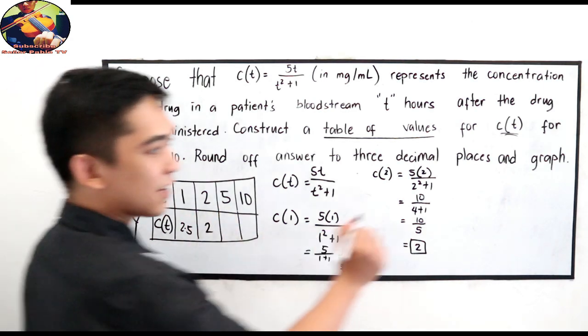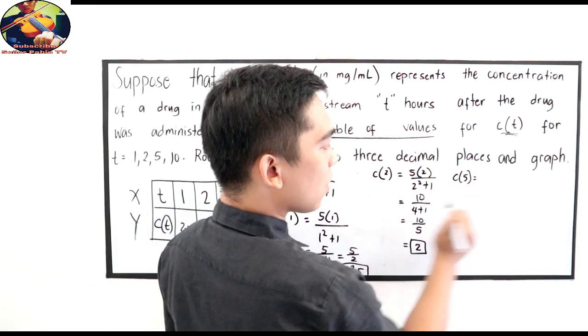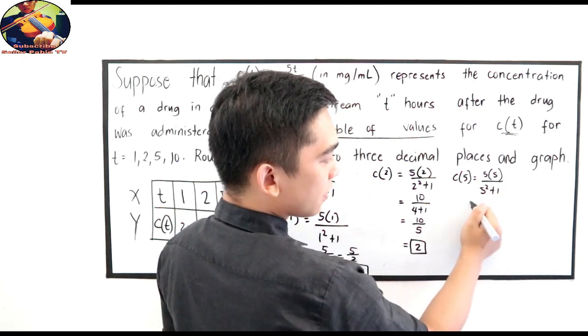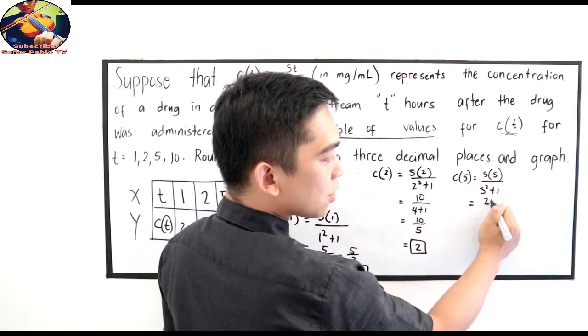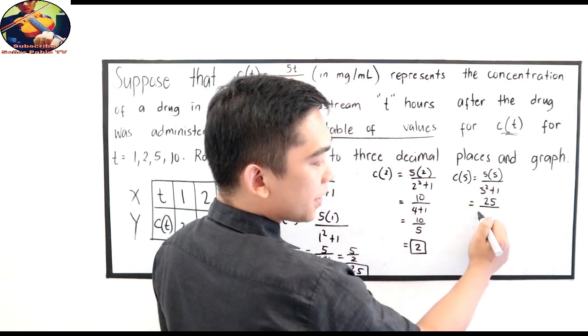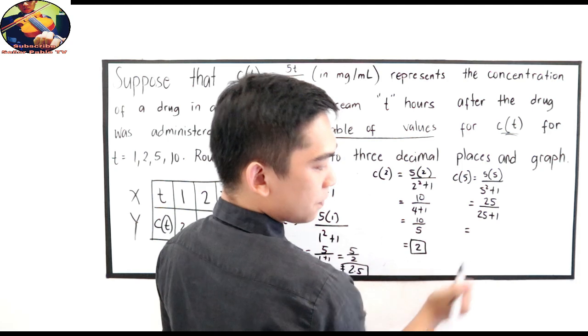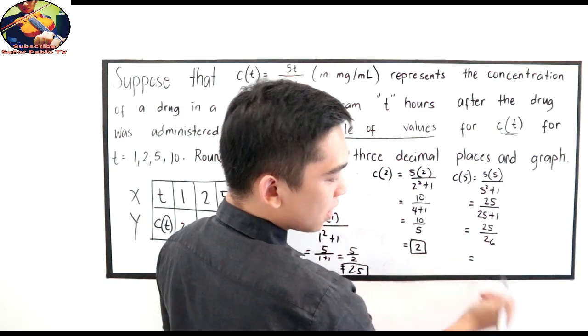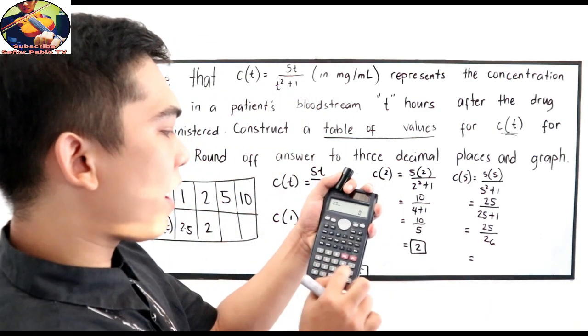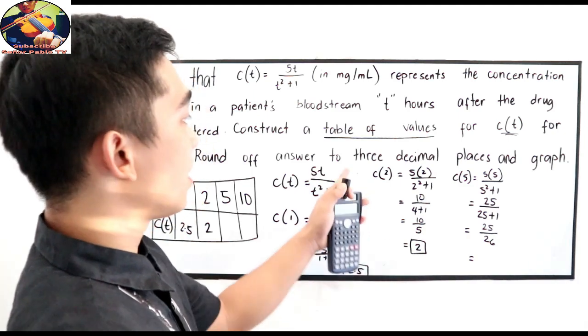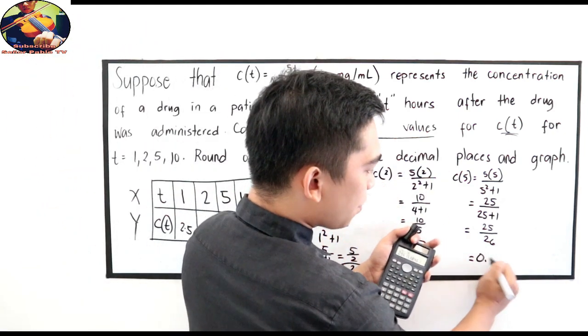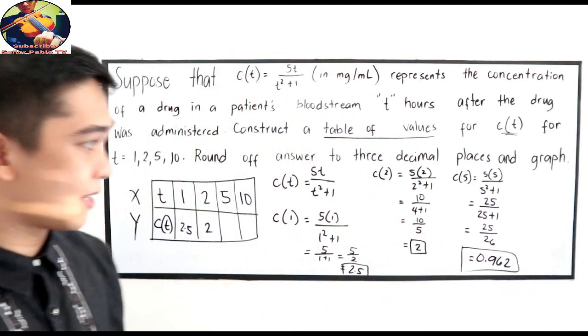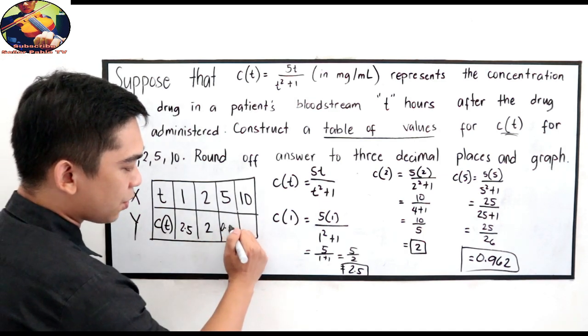Next, 5 tayo. C of 5 is equal to 5 times 5 all over 5 squared plus 1. 5 times 5, that is 25 all over 5 squared, 25 plus 1, 26. Divide natin ngayon. 25 divided by 26, 3 decimal places, this is 0.962. Lagay natin 0.962.